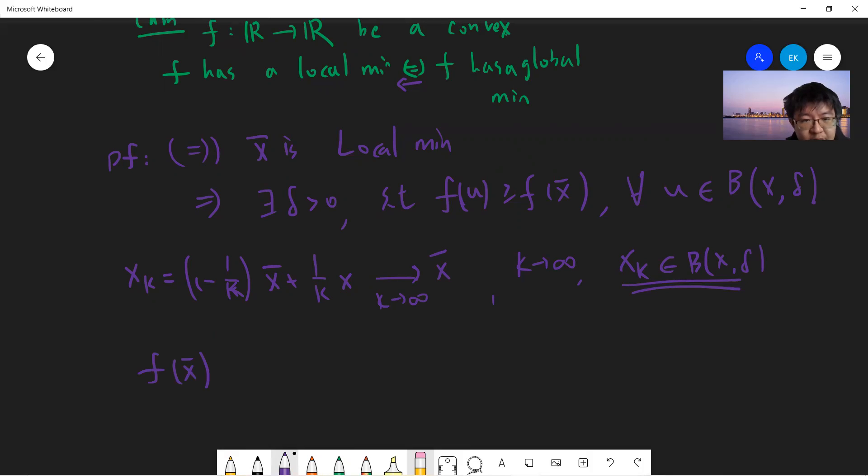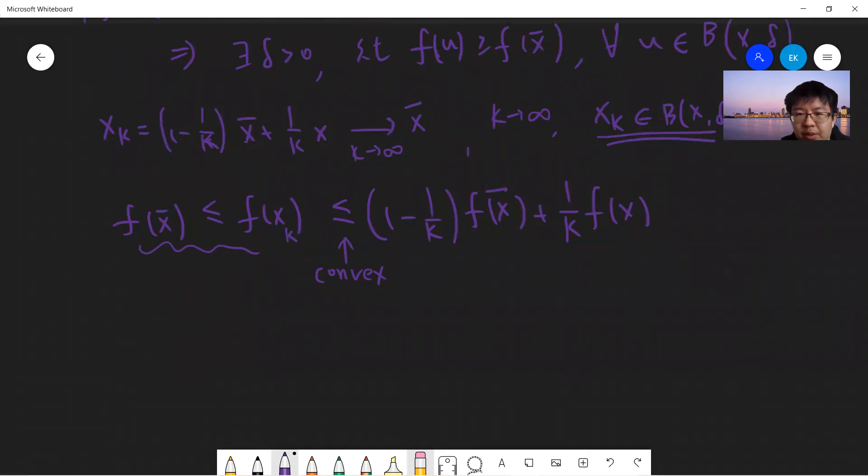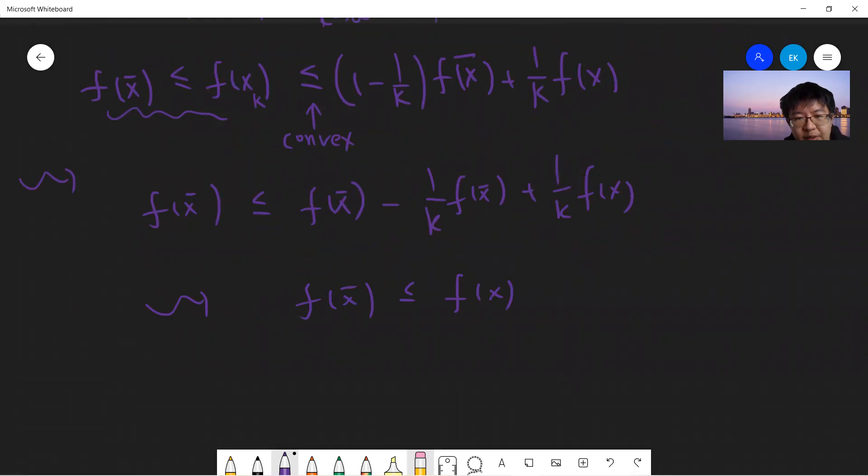This should tell you that now f(x̄) ≤ f(x_k), because x_k now already belongs to this ball. And then f(x_k), you can write this. So this is convex: f((1-1/k)x̄ + (1/k)x) ≤ (1-1/k)f(x̄) + (1/k)f(x). But this tells you that f(x̄) ≤ f(x̄) - (1/k)f(x̄) + (1/k)f(x). So which tells you that f(x̄) ≤ f(x). And remember that we start from for any x, right? So which we prove that for any x, we have f(x) ≥ f(x̄). So which means that x̄ is a global minimum.